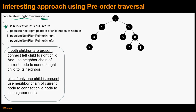Step two of this algorithm is to populate the next right pointers of child nodes of node n using a specific rule. In step three, we make a recursive call to populate next right pointers in the right subtree of node n. In step four, we make a recursive call to populate next right pointers in the left subtree. Note that we are first populating the right pointers in the right subtree before that of the left subtree — this particular order is very important, and I'll explain why in the subsequent explanation.